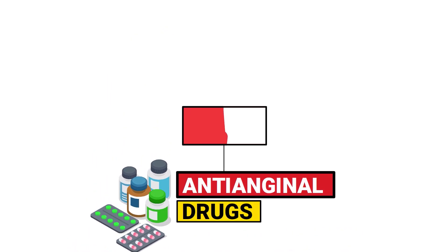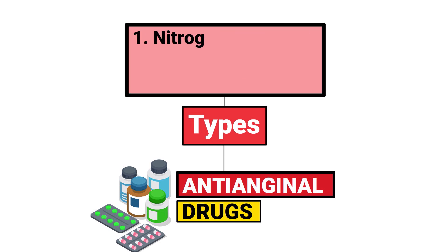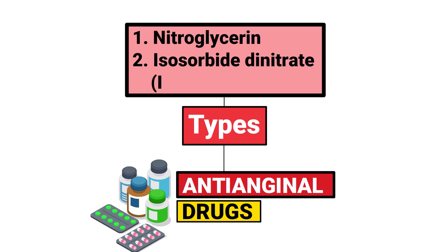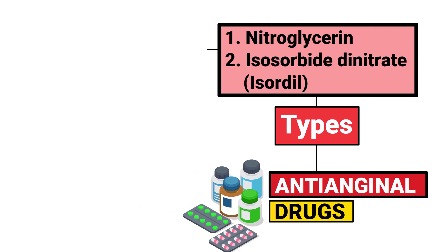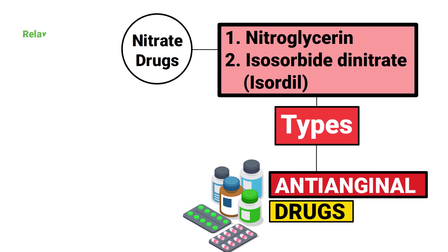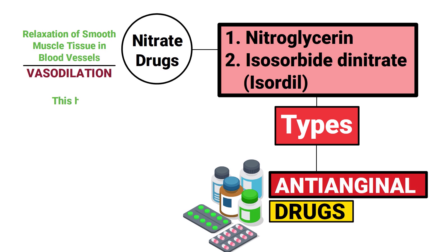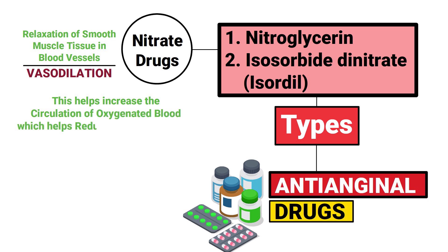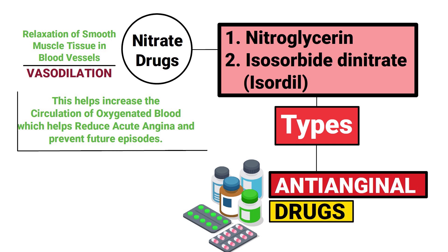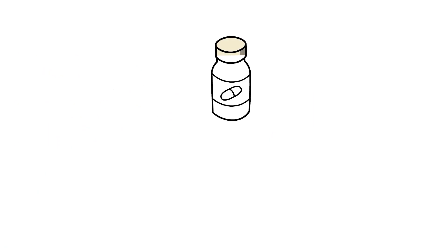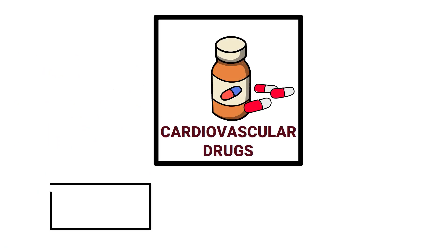Some examples of the most common types of anti-anginal drugs include nitroglycerin and isordyl, both of which are nitrate drugs that cause relaxation of smooth muscle tissue in blood vessels, resulting in vasodilation. This helps increase the circulation of oxygenated blood, which helps reduce acute angina and prevents future episodes.